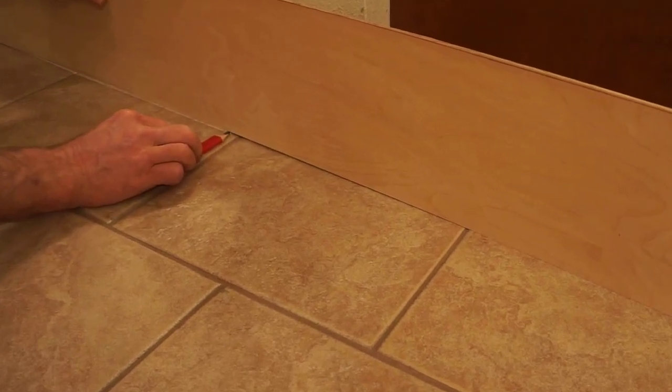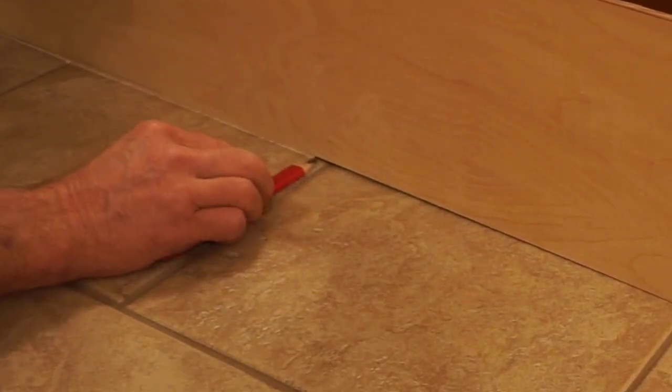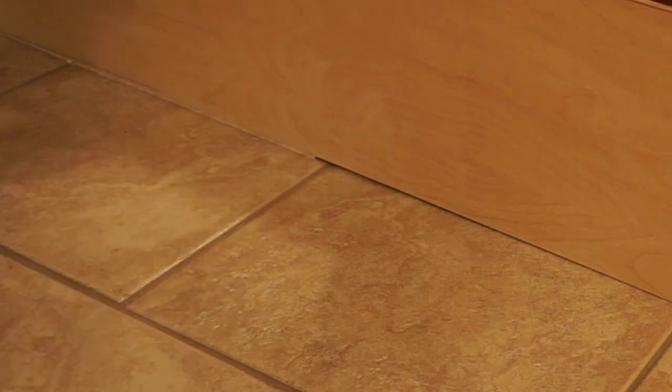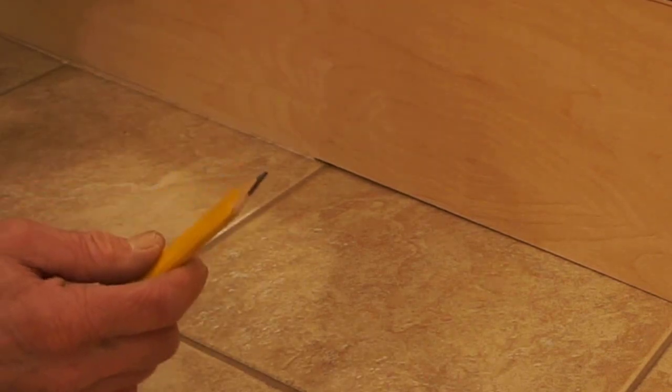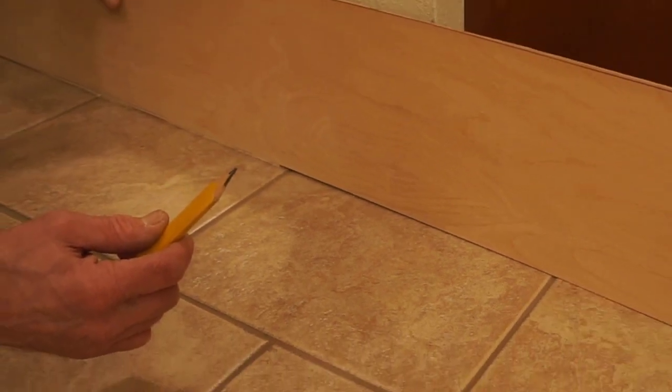When the amount to be scribed is more than an eighth of an inch, the tip of the classic point isn't enough to reach the scribing amount. That's when I employ the offset tip scribe point.